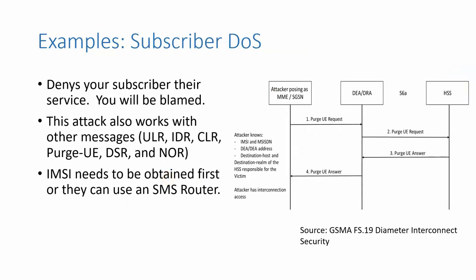Subscriber denial of service: how can an attacker kick a subscriber off the network? If you know the IMSI and the DEAs, it's easy. Simply send a Purge UE request. Once you're in there spoofing an MME or spoofing an SGSN — which again you can simply pay a carrier to do — you send a Purge UE request and that subscriber keeps getting kicked off. You can send that over and over again for the same subscriber and they will not have access.